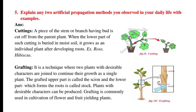Question number 5: Explain any two artificial propagation methods observed in daily life with examples. Answer — Cuttings: A piece of the stem or branch having a bud is cut off from the parent plant. When the lower part of such cutting is buried in moist soil, it grows as an individual plant after developing roots, e.g., rose, hibiscus. Grafting: A technique where two plants with desirable characters are joined to continue their growth as a single plant. The grafted upper part is called the scion and the lower part which forms the roots is called the stalk. Grafting is commonly used in cultivation of flower and fruit yielding plants.